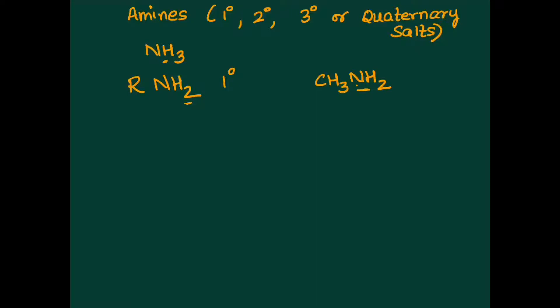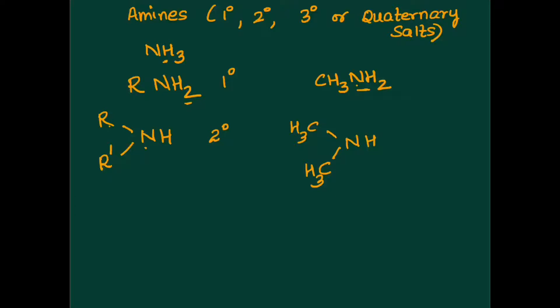Replace the second hydrogen by an alkyl group — you are left with NH and two alkyl groups. The two alkyl groups may be the same or they can be different. For example, we will have NHCH₃CH₃. Herein the nitrogen is attached to 2 other alkyl groups — this becomes a secondary or 2 degree amine.